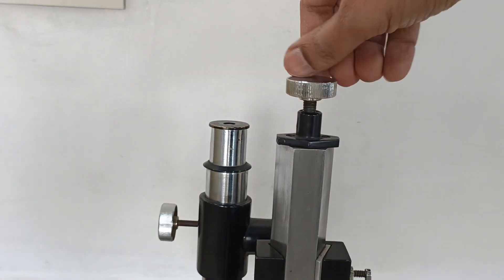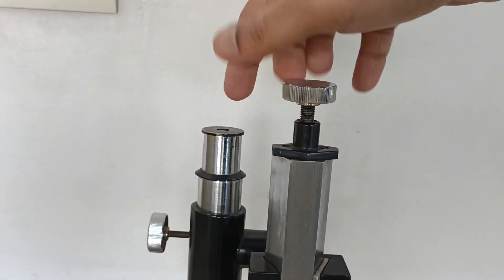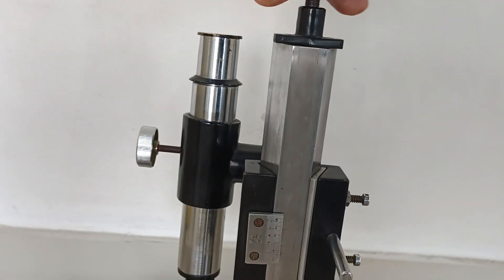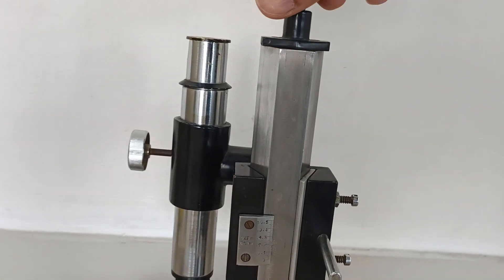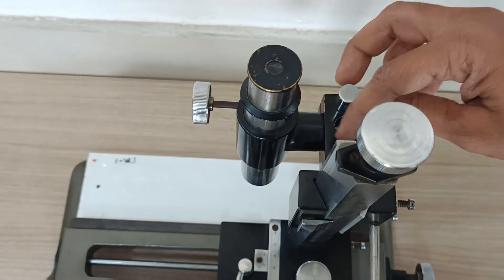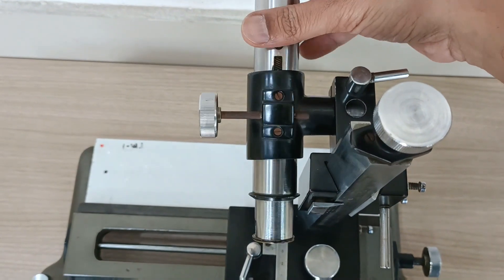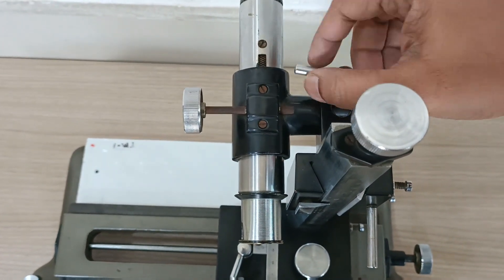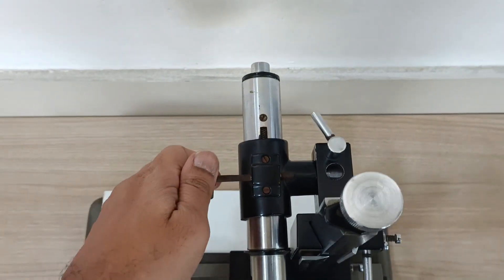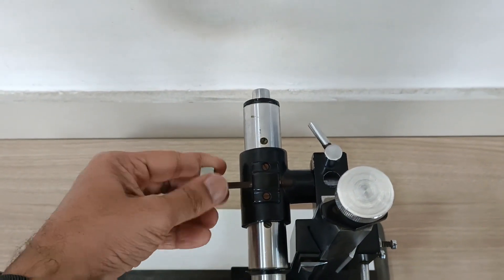By turning this knob the microscope nozzle moves up and vice versa. On loosing this lock, microscope tube can be turned in this manner. Let's lock the microscope. On turning this knob the tube can be moved forward and backward.